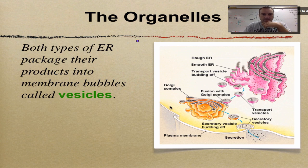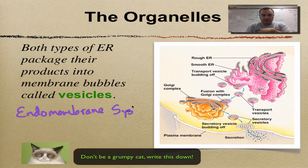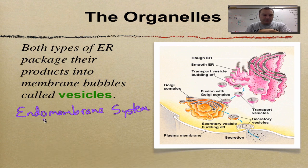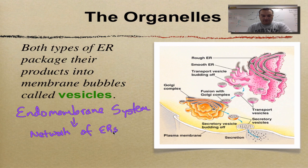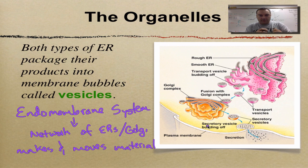This picture shows what's called the endomembrane system — 'endo' means inside, so these are membranes inside the cell. The endomembrane system is a network of ERs and the Golgi, which we'll talk about in the next screencast. It makes and moves materials — think of it like a distribution center for a major store like Walmart, the hub where all materials are moved about.